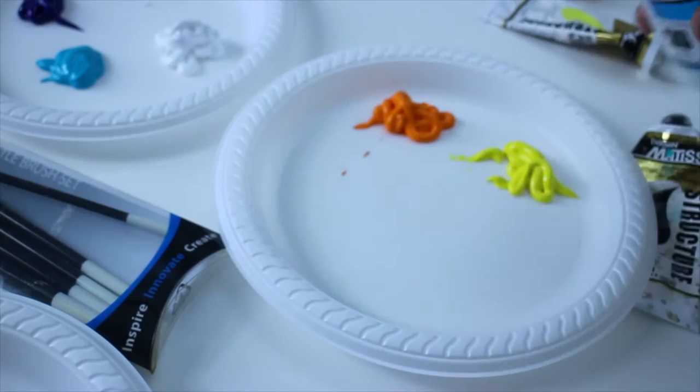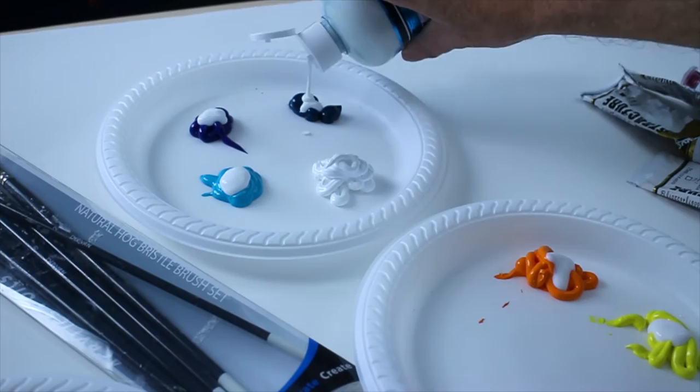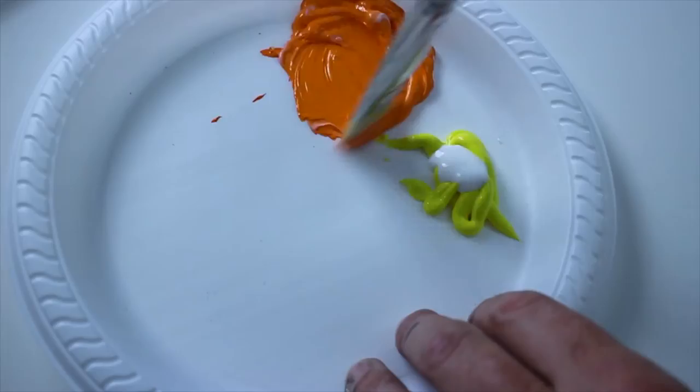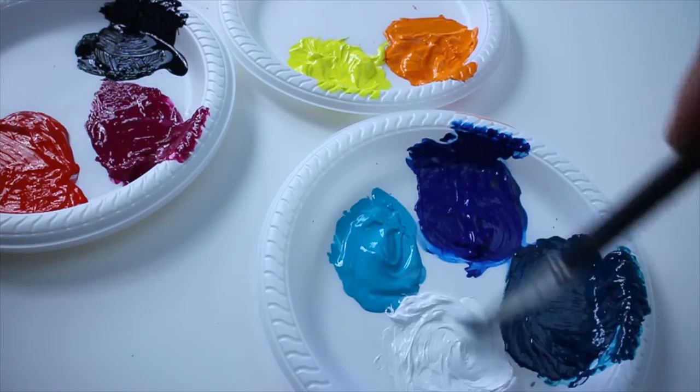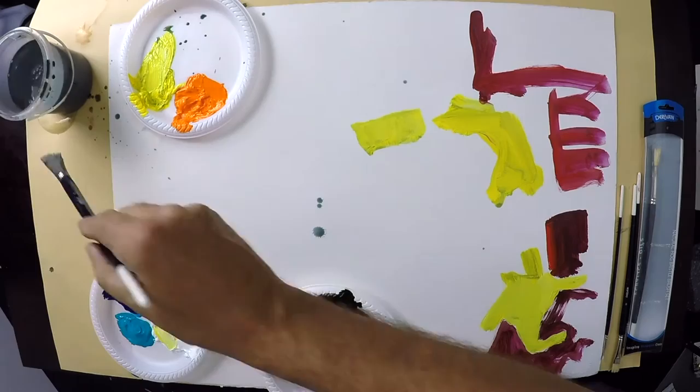With the matte medium, I'm just going to add a little squirt to each pile of paint on my palette. So once I've done that I'm going to combine it with the paint. That way I can dig into the bottles of paint knowing that they've got the matte medium.